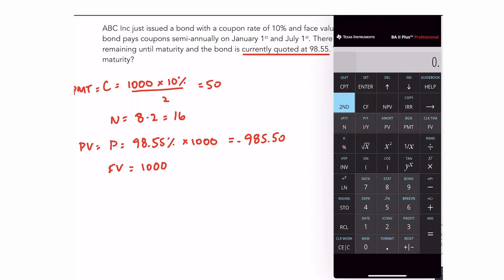So now on the calculator, 50 is the payment, 16 N, 985.5 negative is the present value, 1000 is the future value. Compute IY. So we get an IY here of 5.135.